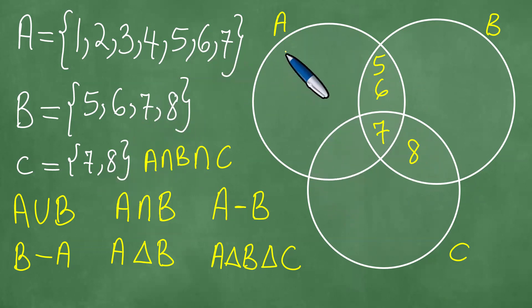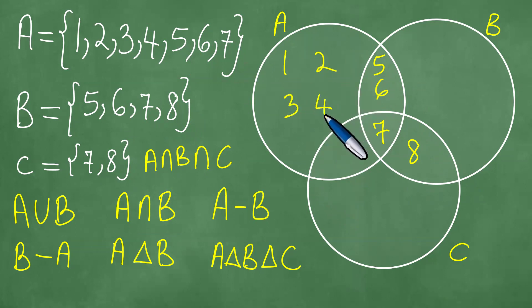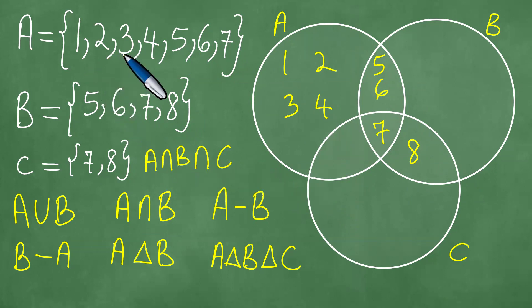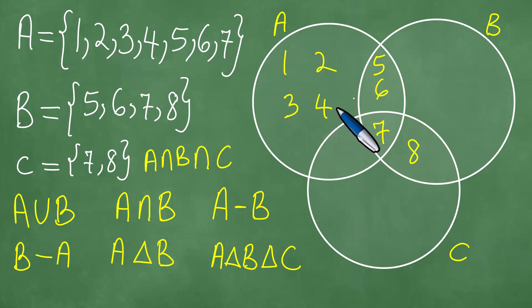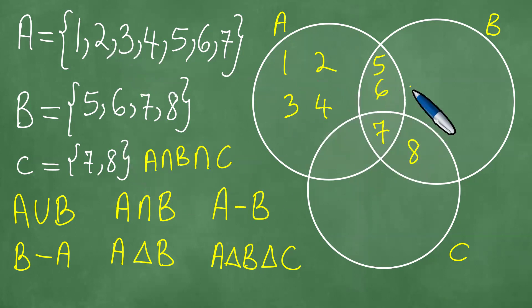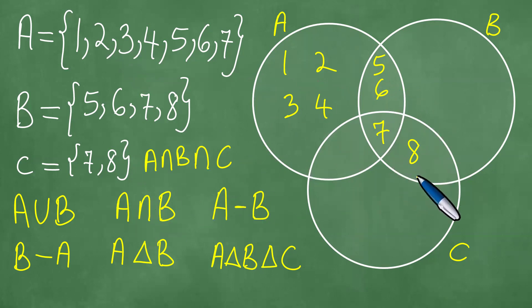There are also 1, 2, 3, and 4 which are in A. So A contains 1, 2, 3, 4, 5, 6, and 7. B contains 5, 6, 7, 8. And C contains 7 and 8.